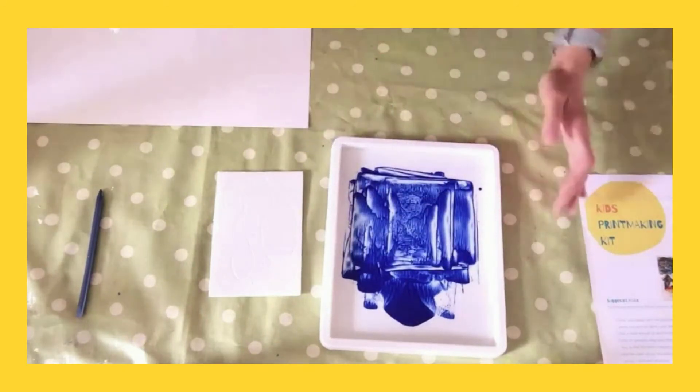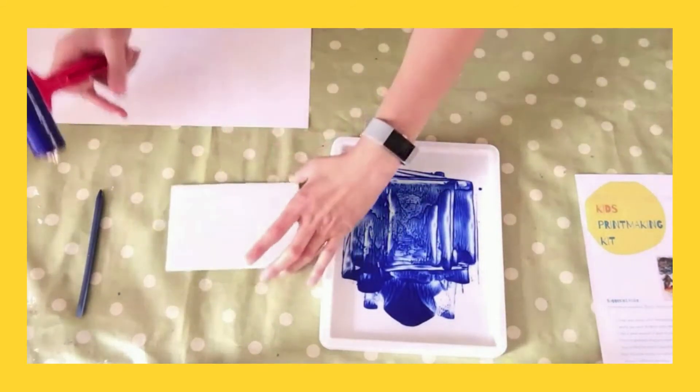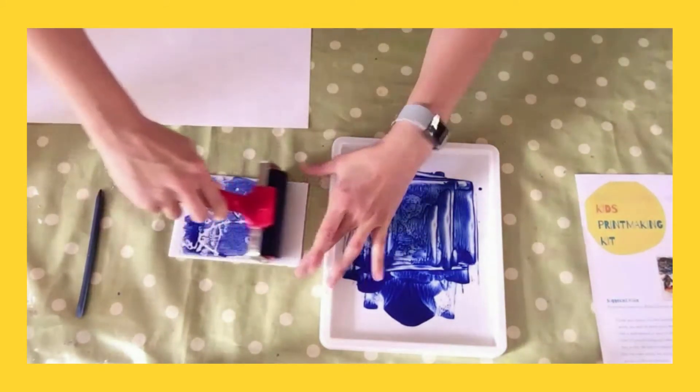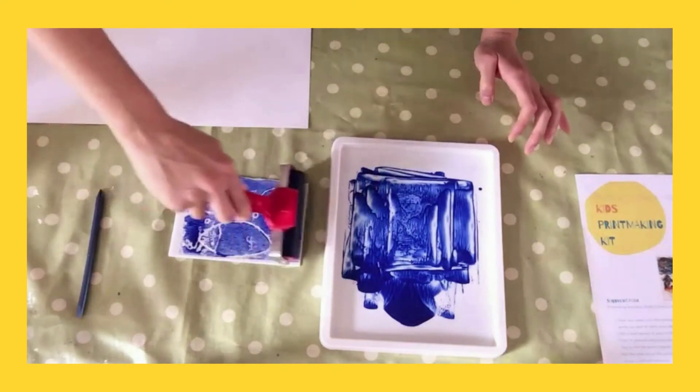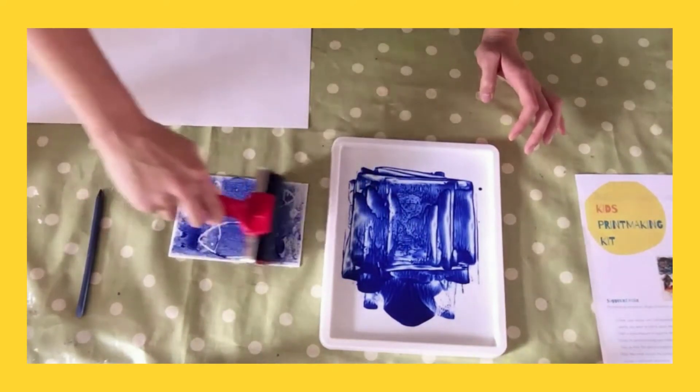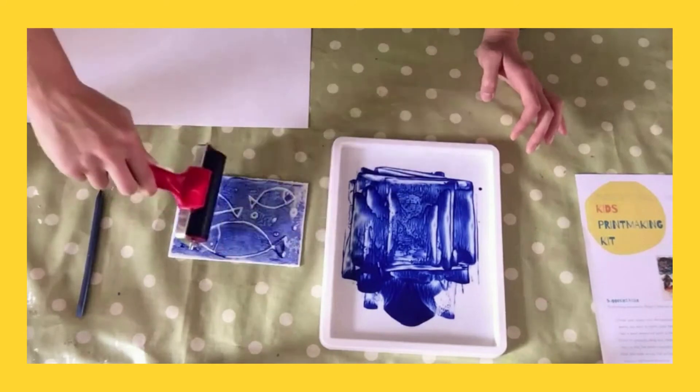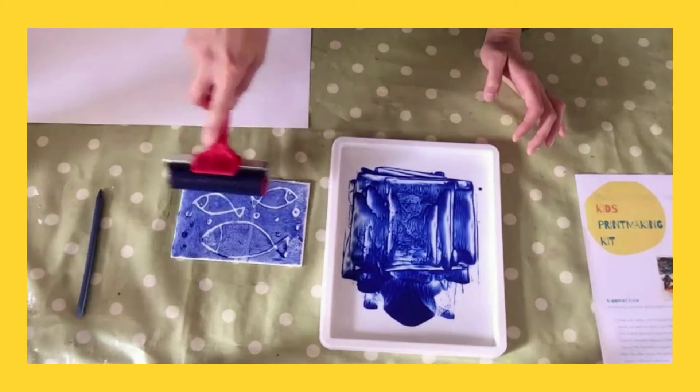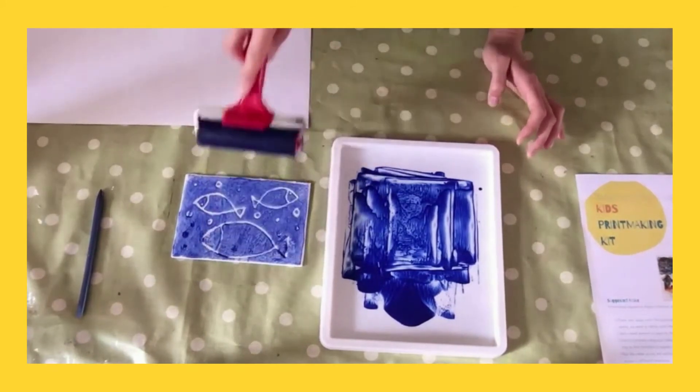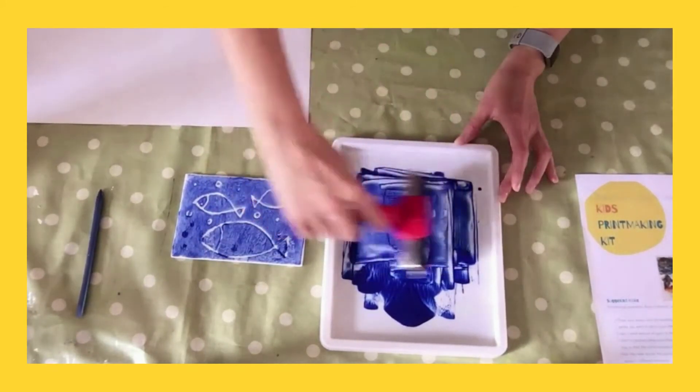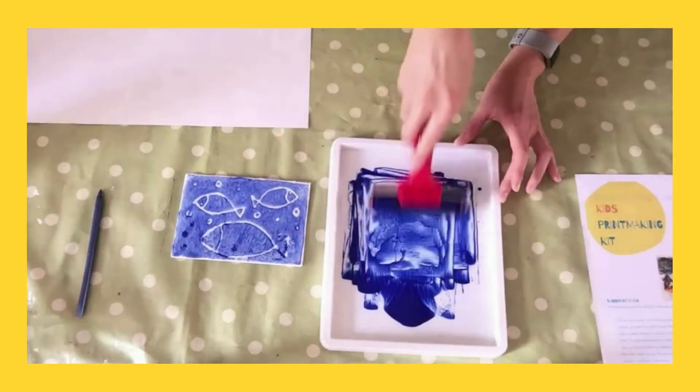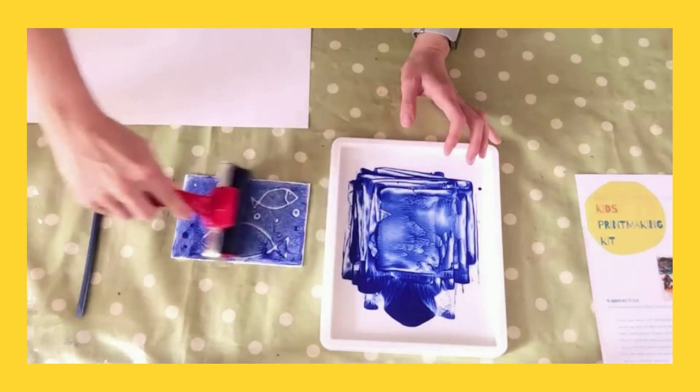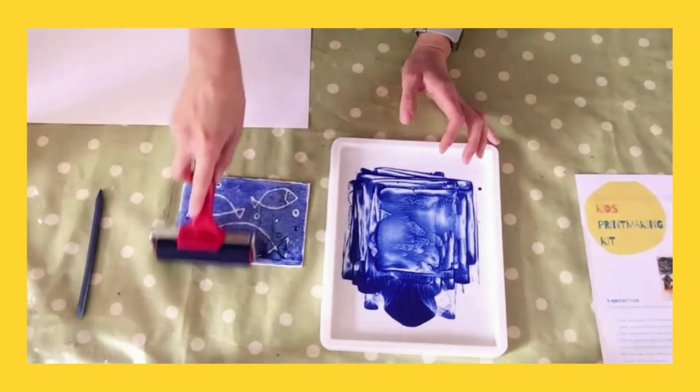Okay. And what you want to do then is hold your polystyrene sheet and run the roller over the top like so, making sure all of it's covered. You can run it across in different directions. I think I might put a bit more paint on there. Okay, run over again. As you can see, our design is starting to be revealed.